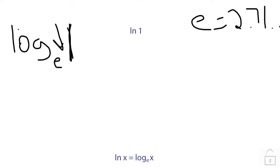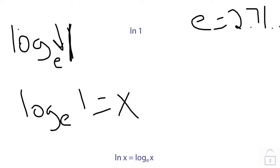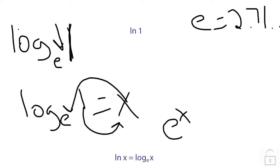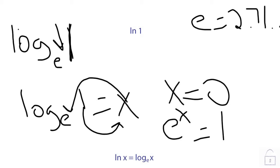So now let's just rewrite that. We get the log base e of 1 and we can set that equal to x. Now to solve this, we just solve it like any other normal log. This x right here becomes our exponent for the e and this 1 goes to the other side, so we can rewrite it as e to the x is equal to 1. Any number to the 0 power is equal to 1, so in this case x is equal to 0. So that's not bad — let's get into some other examples.